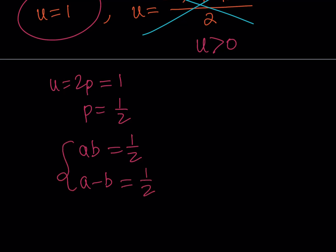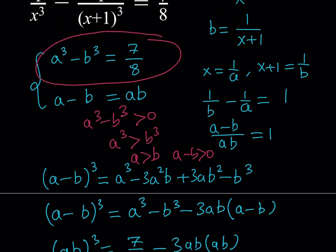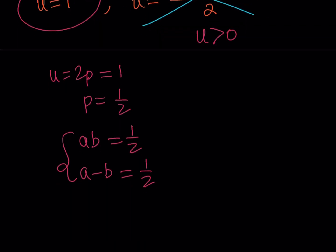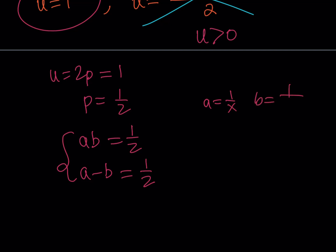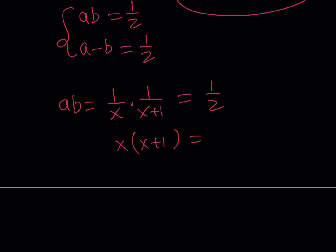Now we back-substitute. a equals 1 over x and b equals 1 over (x plus 1). Using the product: ab equals 1 over x times 1 over (x plus 1) equals 1 half. Reciprocating both sides gives x times (x plus 1) equals 2. Finally, after all these manipulations, we have an equation in x.